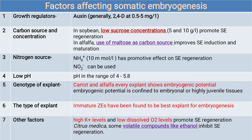Genotype of the explant matters — carrot and alfalfa are used. Every explant shows embryogenic potential, which is confined to embryonal or highly juvenile tissues. Immature zygotic embryos have been found to be the best explant for embryogenesis. Other factors: high potassium level and low dissolved oxygen promotes somatic embryogenesis in citrus media, while volatile compounds like ethanol inhibit somatic embryogenesis.